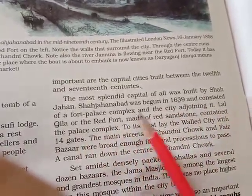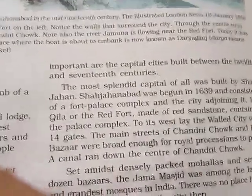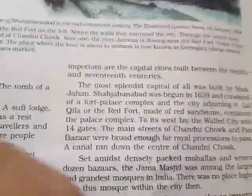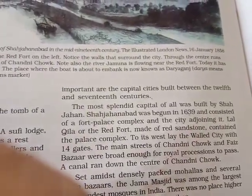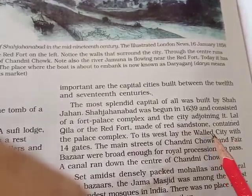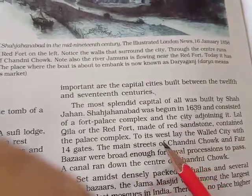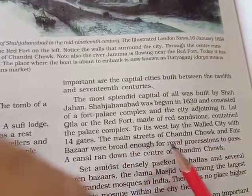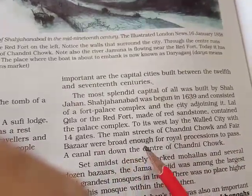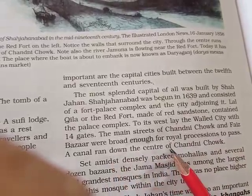Shahjahanabad was built by Shah Jahan in 1639. The Lal Qila or Red Fort was made of red sandstone, containing the palace complex, with a western layout wall and 14 gates. The main street, Chandni Chowk or the Faizabad Bazaar, was broad enough for royal processions to pass, and a canal ran along the center of Chandni Chowk.